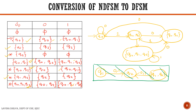Therefore, since Q2 is the final state, all states which contain Q2 as an element will be considered as the final states of the DFSM.